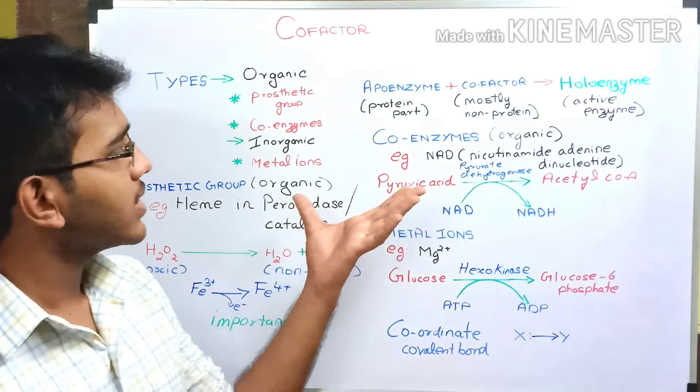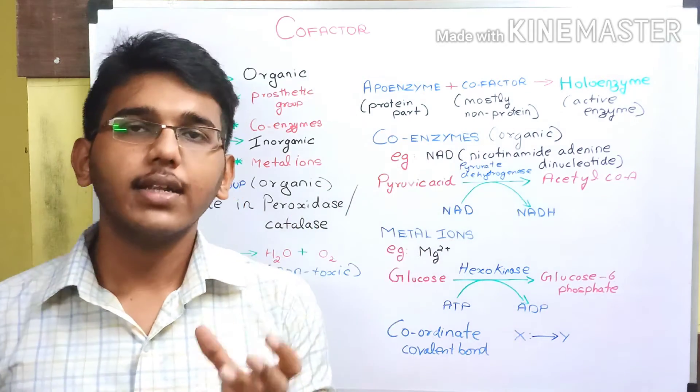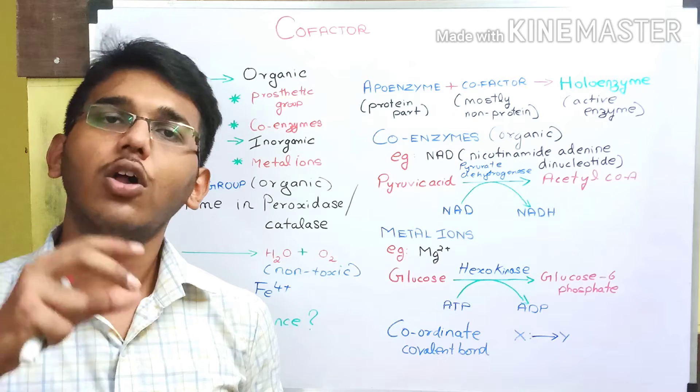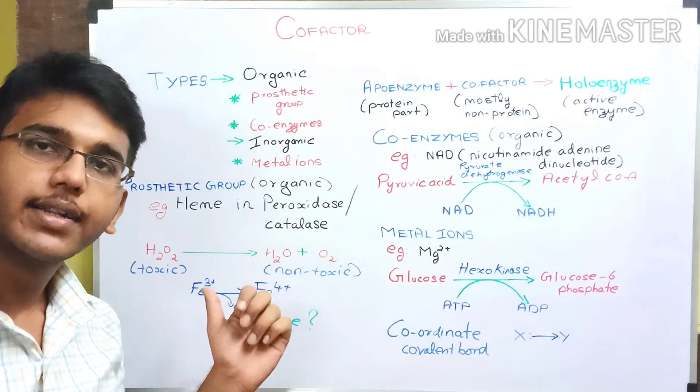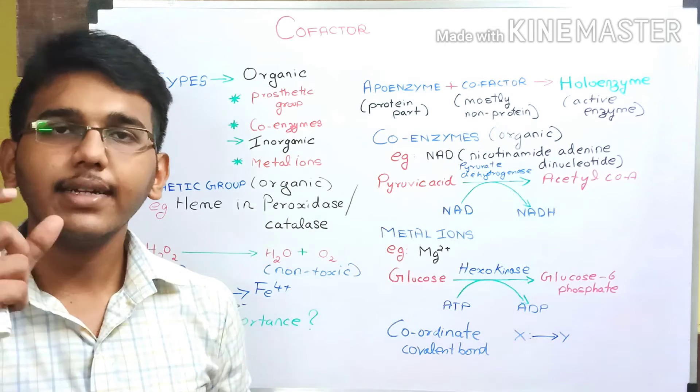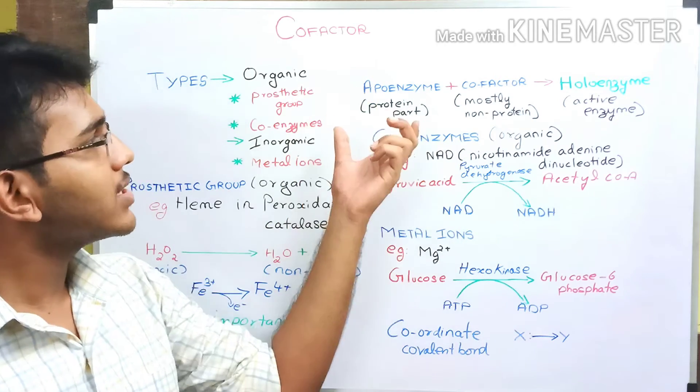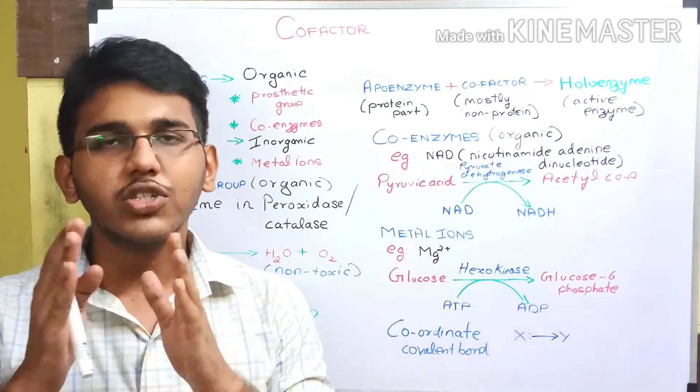Next we have the coenzymes. What is a coenzyme? A coenzyme is also an organic cofactor. But the difference between the cofactor and coenzyme is the interaction or combination of apoenzyme and coenzyme is very short-lived and it will easily break down.